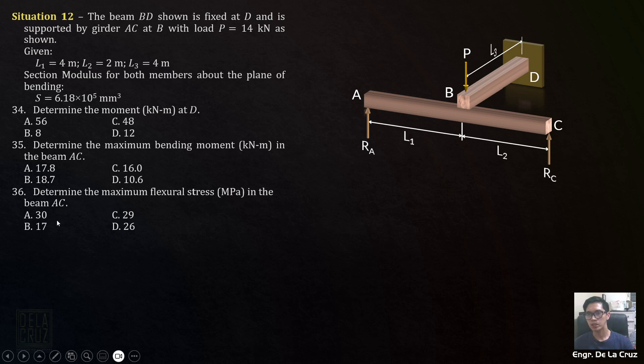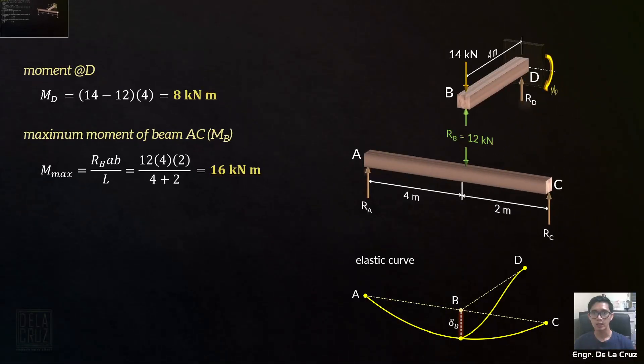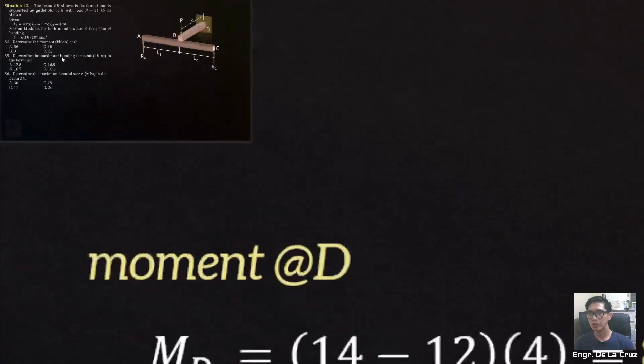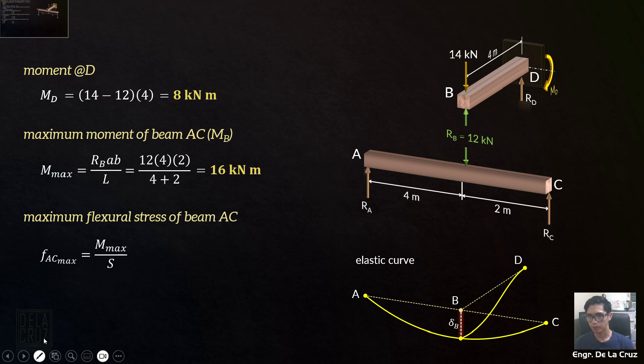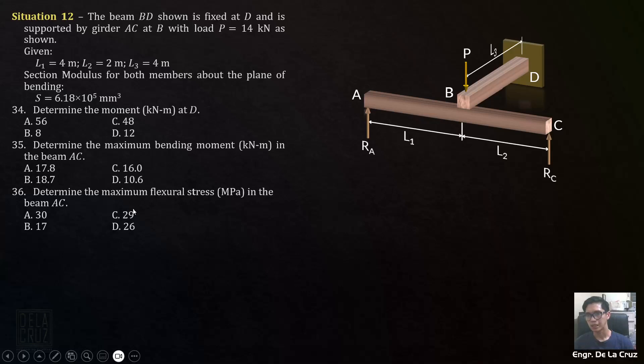Number 36, determine the maximum flexural stress in beam AC. Flexural or bending stress is easy. Using the formula MC over I. But what is given here by the way is section modulus. We'll use the formula for maximum flexural stress is moment over section modulus. Of course, to make it maximum, use the maximum moment. So 16 times 10 raised to 6, so that the unit of that moment is newton millimeters. This is in mm cubed, 6.18 times 10 raised to 5 mm cubed. The resulting unit is megapascal, 25.89. That's letter D, 26 megapascal.